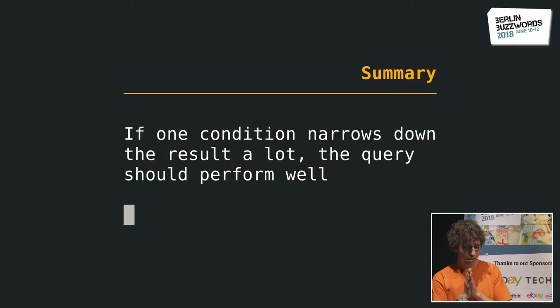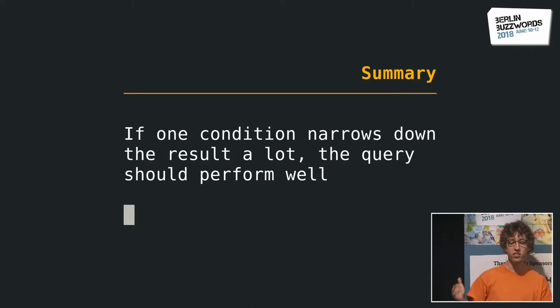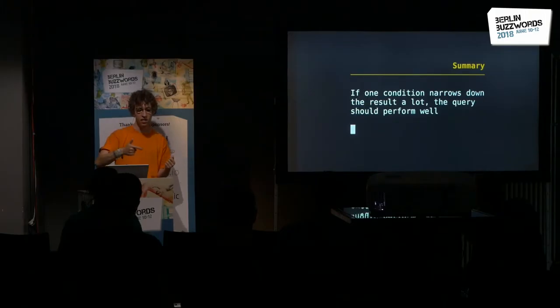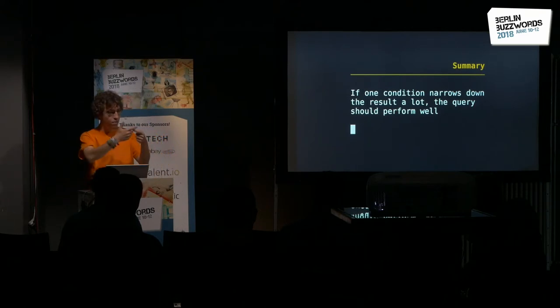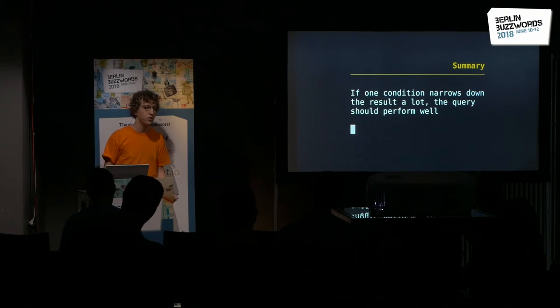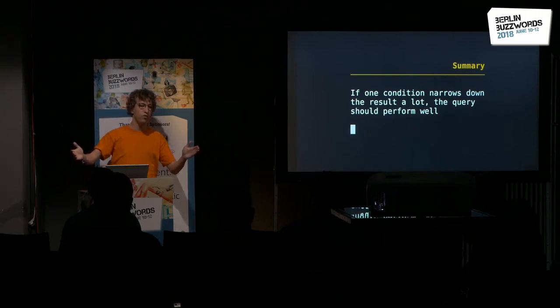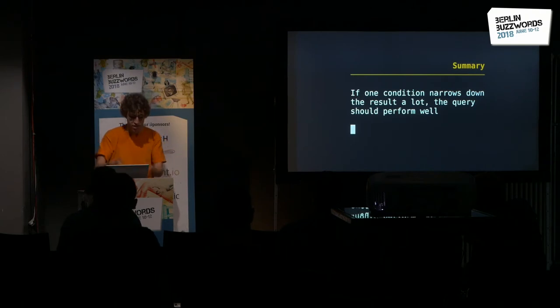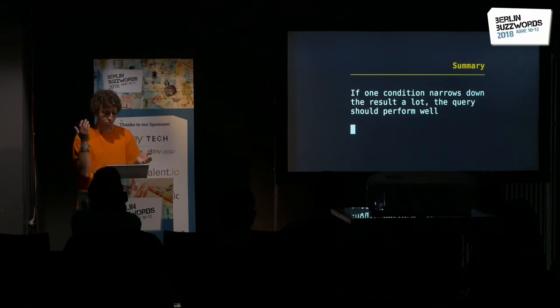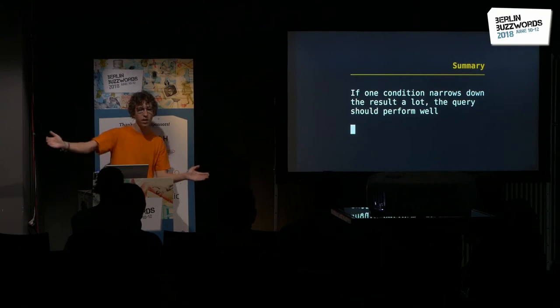This leads to a cool property of this index: if you have several conditions and one condition really narrows down the result, the query should be fast, because you can easily skip over all other conditions. That's a property which is often the case, especially with geodata. What often happens is you query a huge area with a small time slice, or the other way around — for example, the average temperature of several countries but only from the past week, or a time series of a city with pollution values over a year but a small area. Since one condition is small, you can skip over a lot of data, and the query is fast.